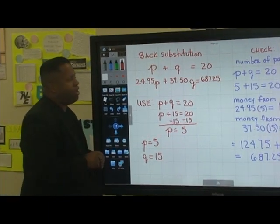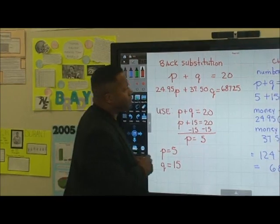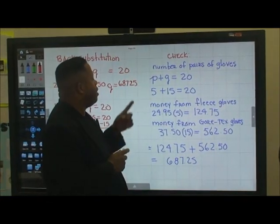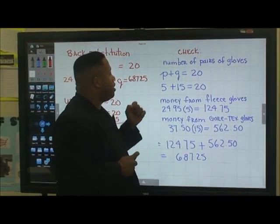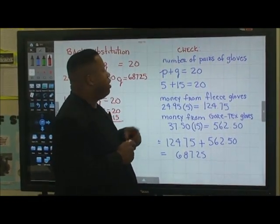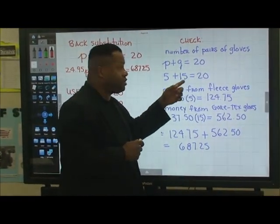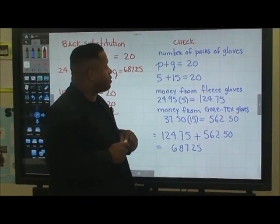So let's run a check real quick. So the number of pairs of gloves here is being represented here. So we got for fleece, they made 5 pairs. And then of course for Gore-Tex, Gore-Tex made 15 pairs. So this checks out safely to be equal to 20 pairs of gloves altogether.